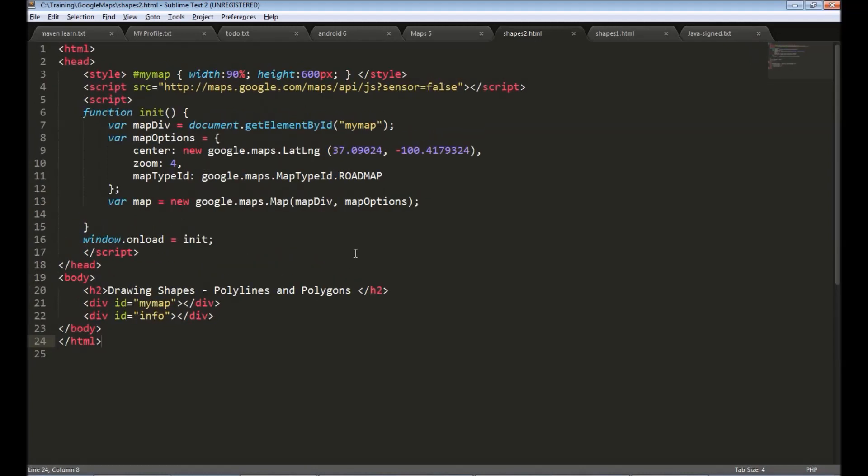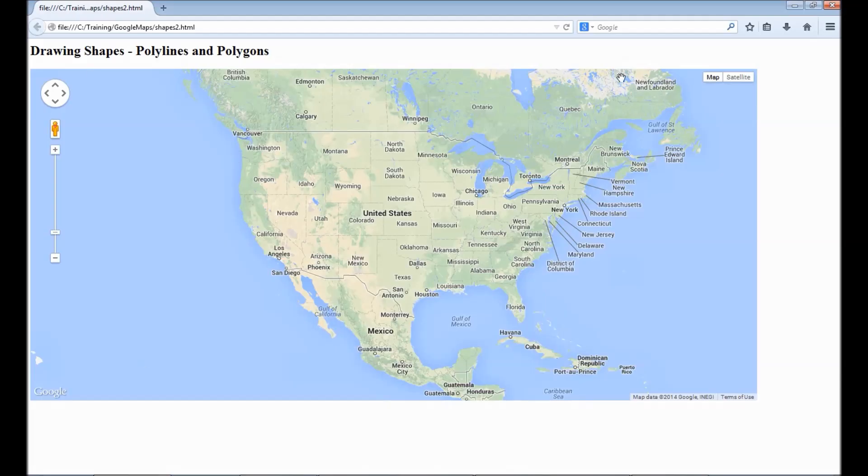I have a basic map here, which displays a map something like this. Now let's draw a line from say California to New York and to Mexico. We will build an array to display that.